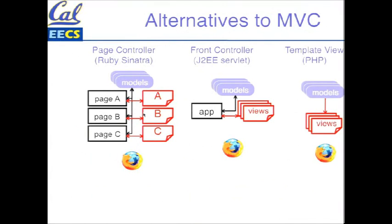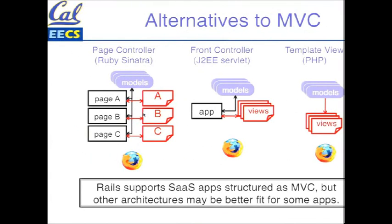A third alternative: if you've used PHP before, in PHP the controller is essentially implicit. You don't tend to write separate controller code — the PHP evolution is that you write a bunch of HTML pages and embed PHP code into them. Of course, if you're a good programmer you try to separate some of that code into their own PHP files. But in general, the view of the world from these kinds of apps is there's a bunch of views that are supported, and those views rely on logic in models in order to fill in stuff into the HTML templates.